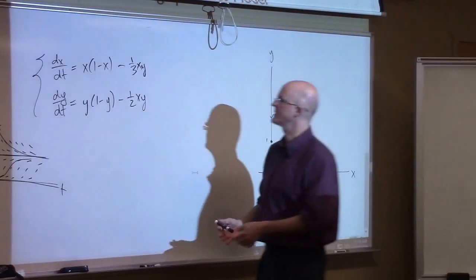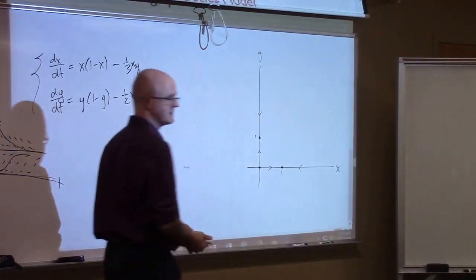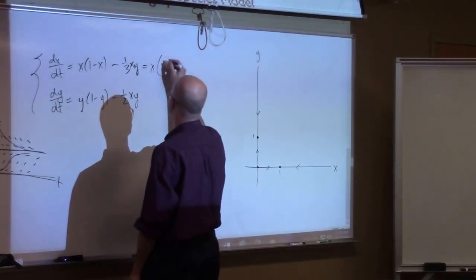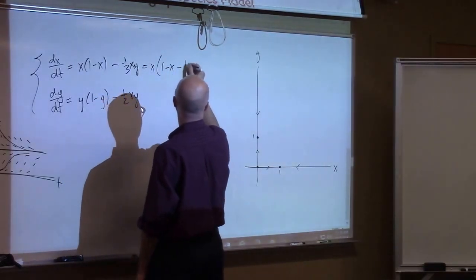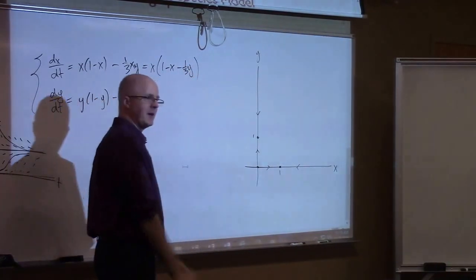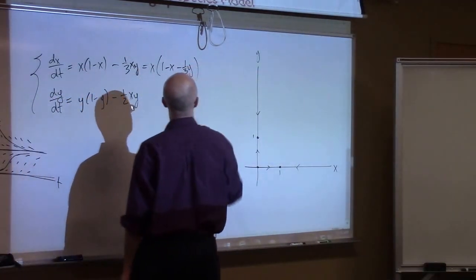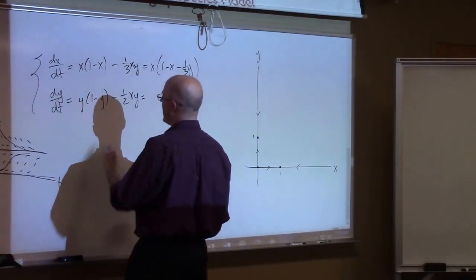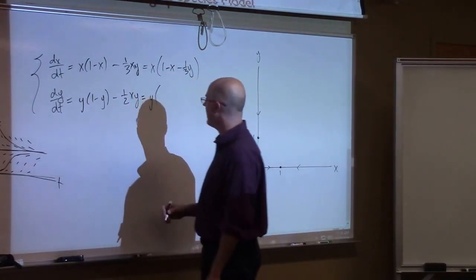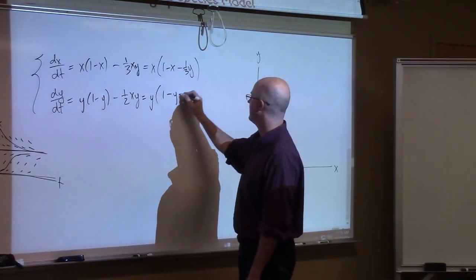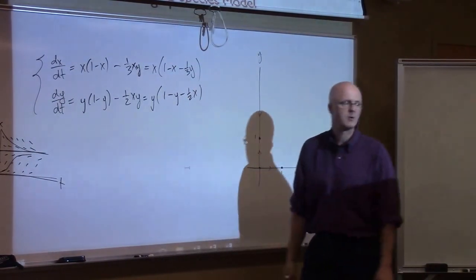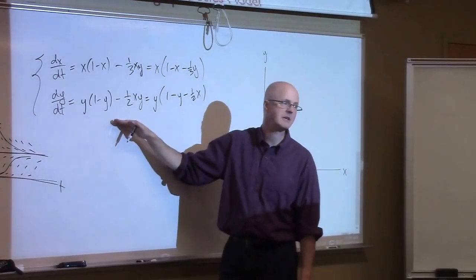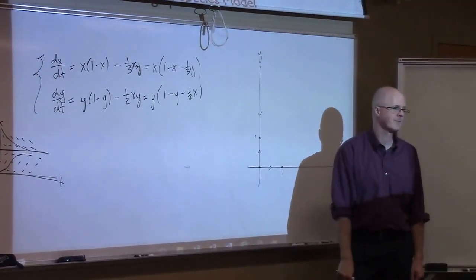To find any other equilibrium point, you want to factor as much as possible. We can factor out the x, leaving x times (1 − x − (1/3)y), which is the way the book wrote the equations initially. Factor out y in the second equation: y times (1 − y − (1/2)x). I could write the equations this way initially, and you should be able to factor like that.